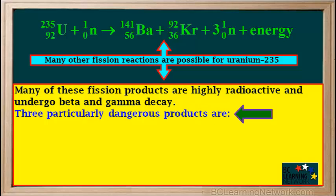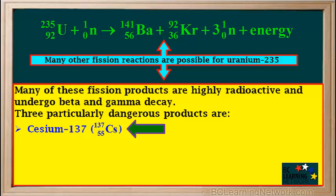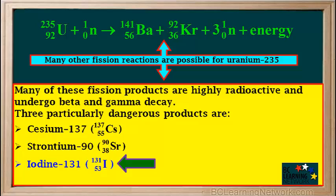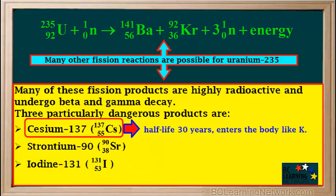Three particularly dangerous products are cesium-137, strontium-90, and iodine-131. Cesium-137 has a half-life of 30 years, so it's radioactive for a long time. It's a group 1 element like potassium, so it enters the body like potassium. A radioactive element in the body can cause cell DNA damage or even cancer.